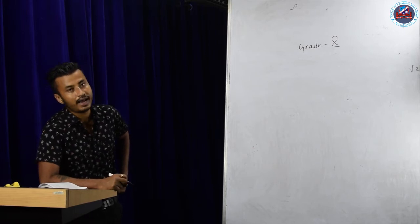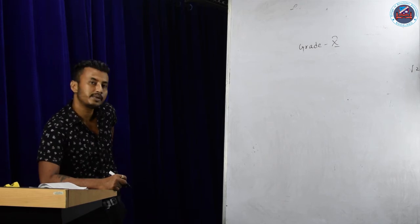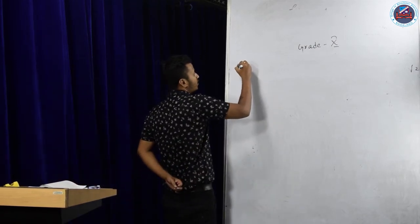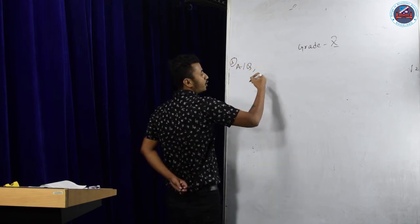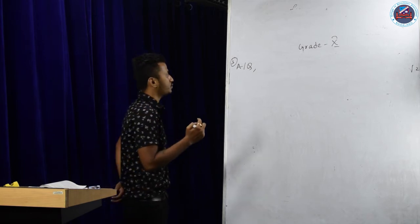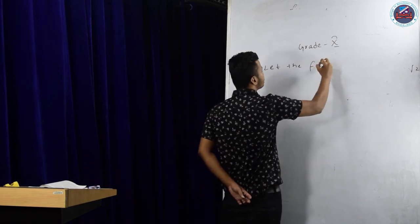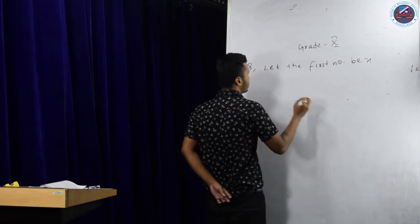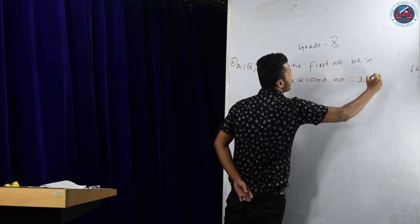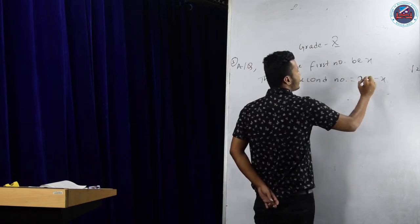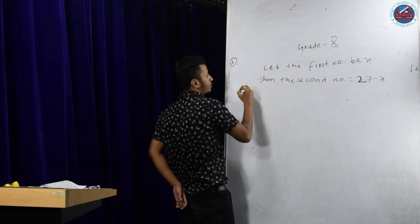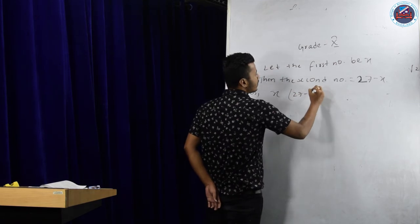According to the question: product of two numbers is 182 and sum of two numbers is 27. So let the first number be x. Since their sum is 27, the second number can be written as 27 minus x. Now, the product of the two numbers gives us: x times (27 minus x) equals 182.